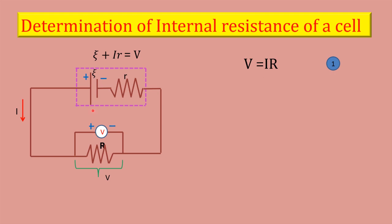We know that psi + Ir = V. And so, Ir could be written as psi - V. Dividing equation 2 by 1, we get Ir divided by IR = (psi - V) divided by V.